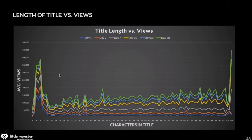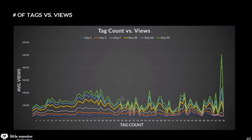Title length versus views: the shorter the title, the better — three to six words are going to do the best. Doesn't mean you can't do well with a long title, but short titles really, really matter. Tag count versus views: I think this is more of a correlation. The people who know what they're doing are also taking a little bit of time to do a lot of tags, but it's probably because they already got good at making videos and are also using all the features — not because the tags themselves drove the views.